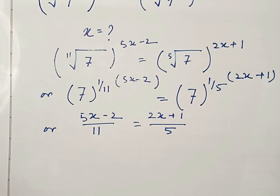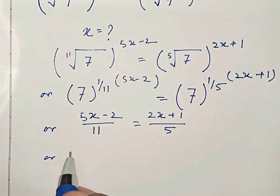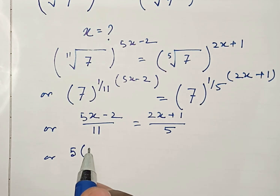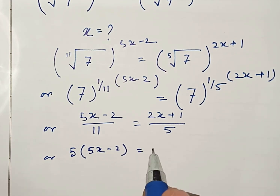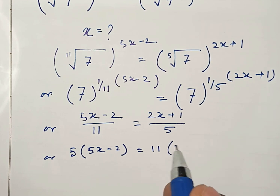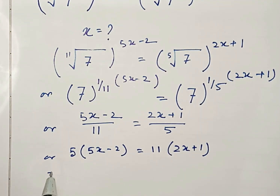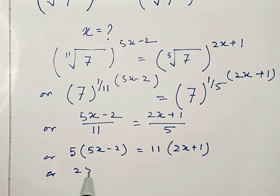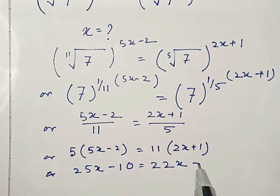Now from this equation, if you cross multiply — 5 multiplied by 5x minus 2 equals 11 multiplied by 2x plus 1 — that gives us 25x minus 10 equals 22x plus 11.